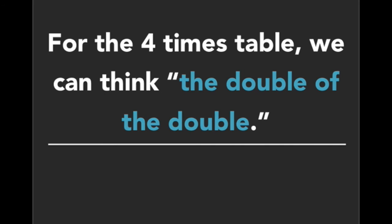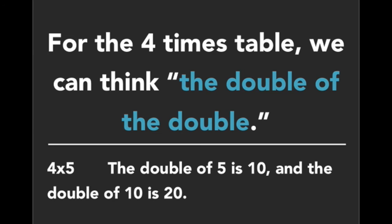Now when we move to the 4 times tables, we can think the double of the double. Some people also say the doubles doubles. Here's an example of what that means. For the equation 4×5, the double of 5 is 10, and now we double the 10 to make 20.